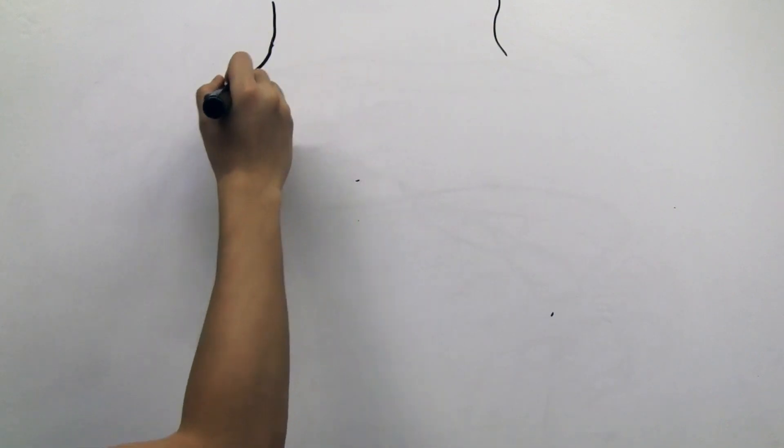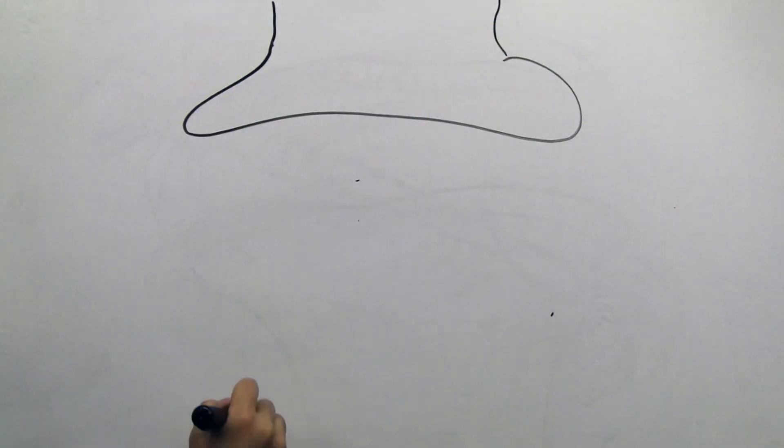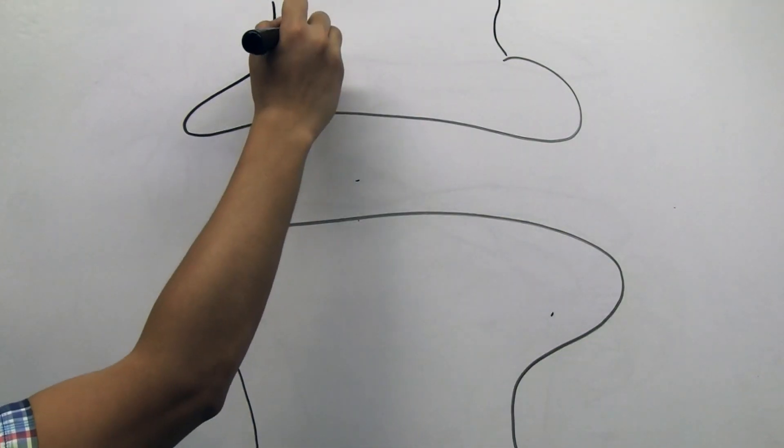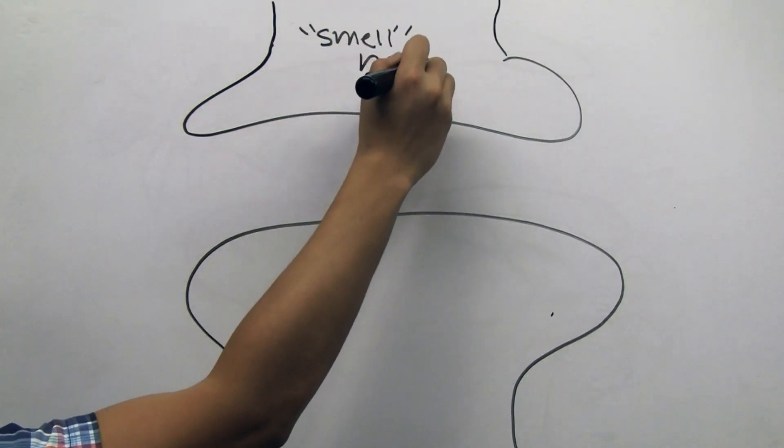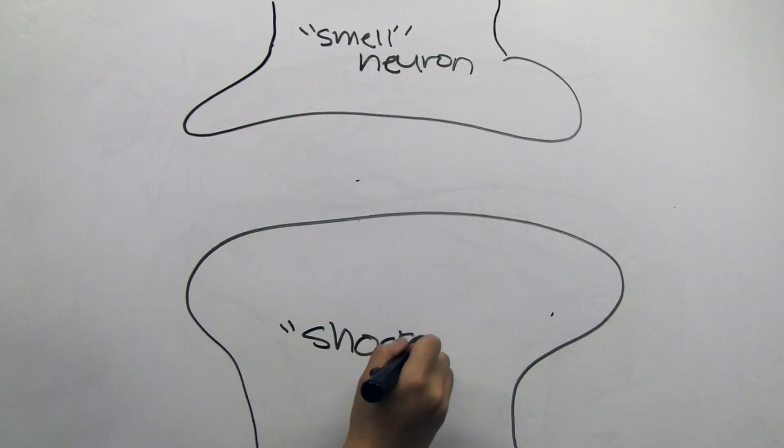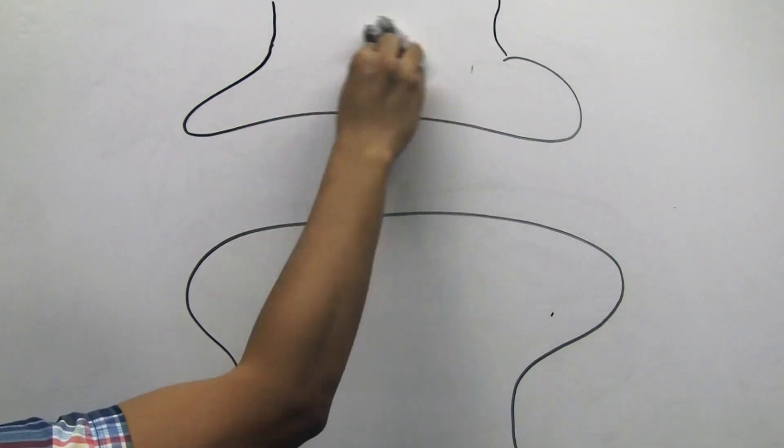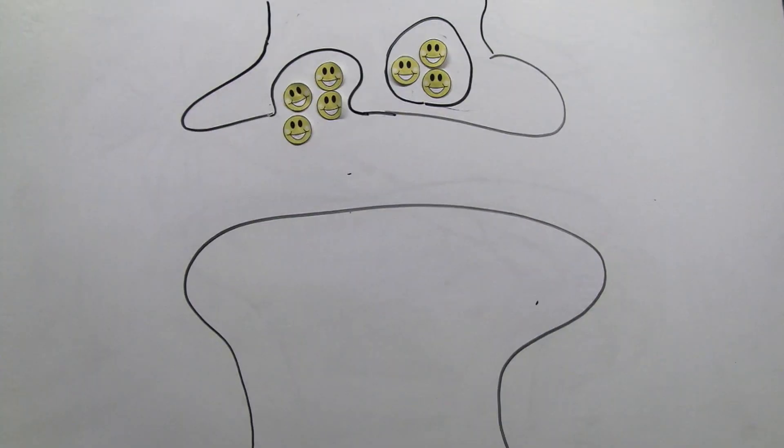There are millions of neurons in the fly brain that are connected to one another. Look, here are two. We'll name the first neuron the smell neuron, and the one receiving the signal the shock neuron. When the flies smell something and get shocked at the same time, they'll remember to avoid that smell in the future.